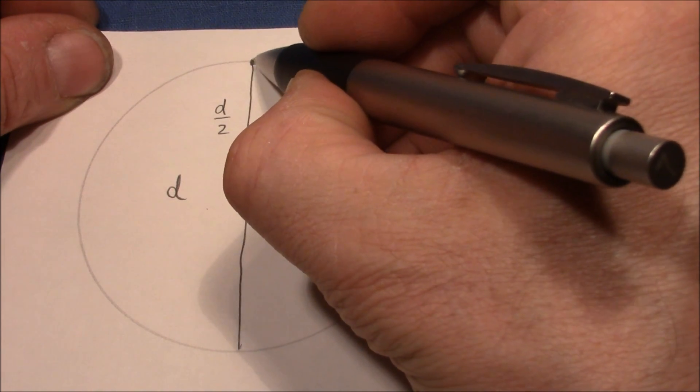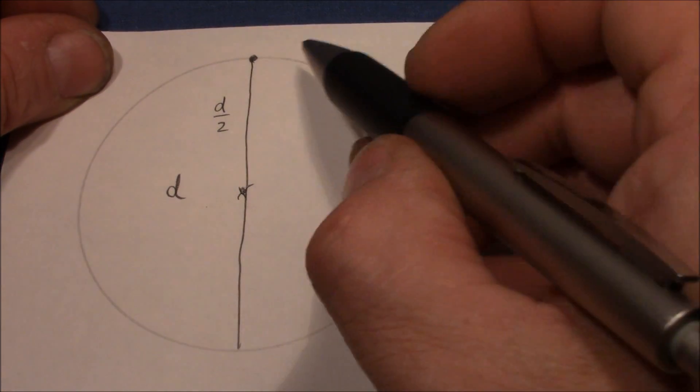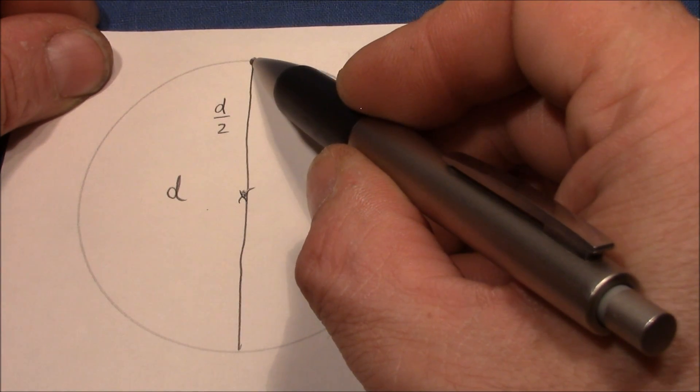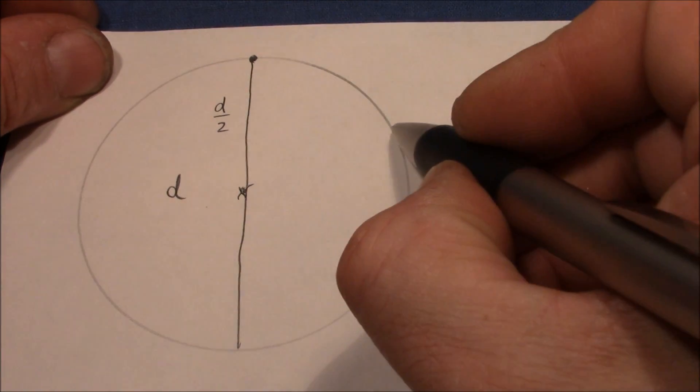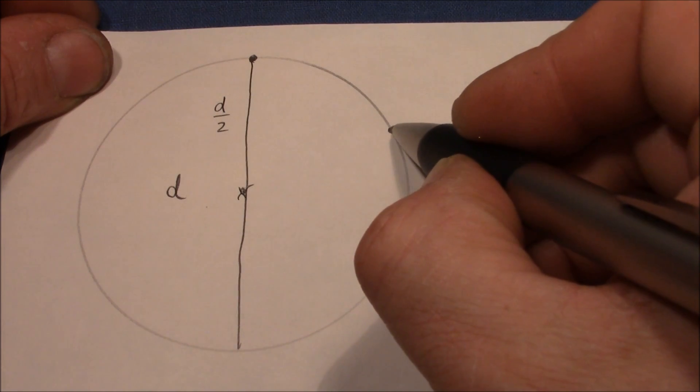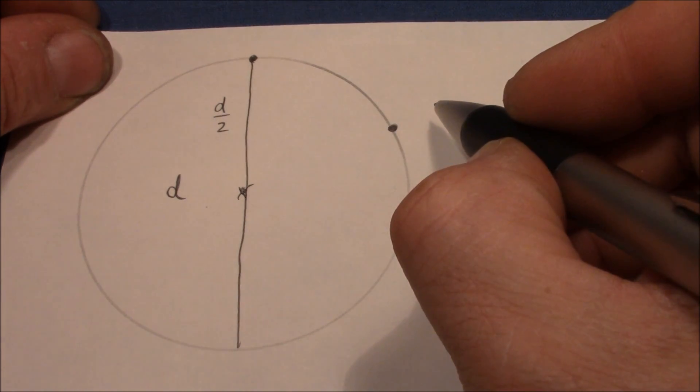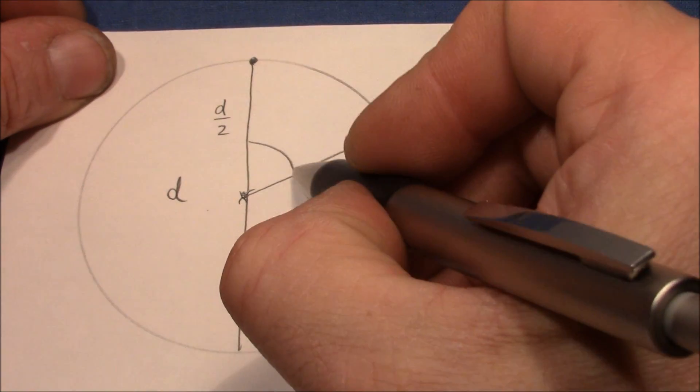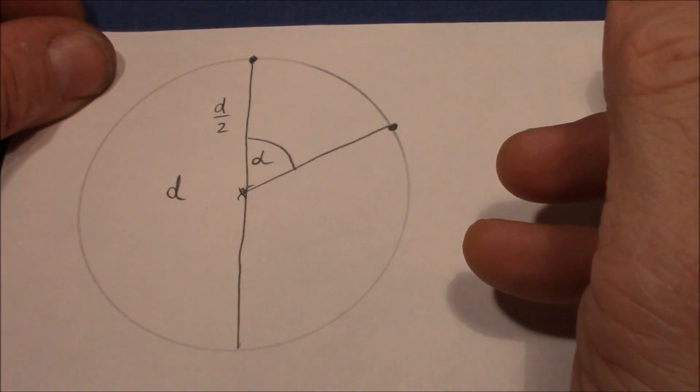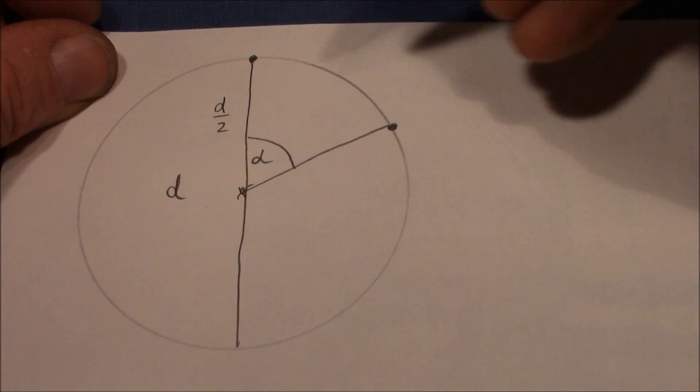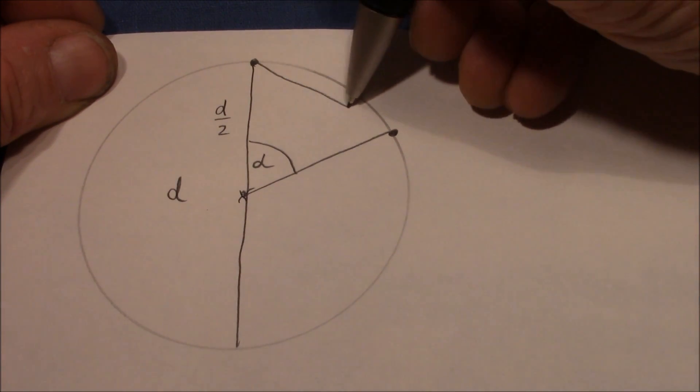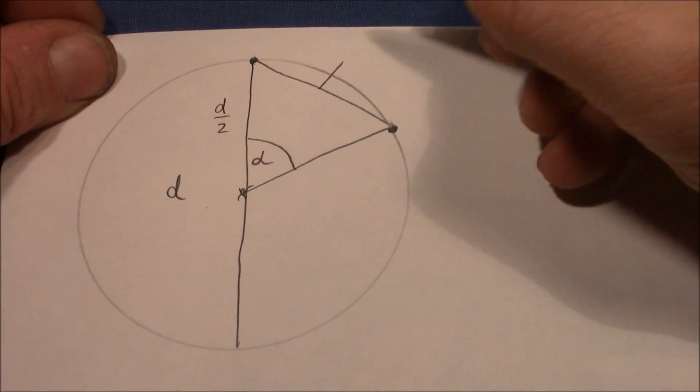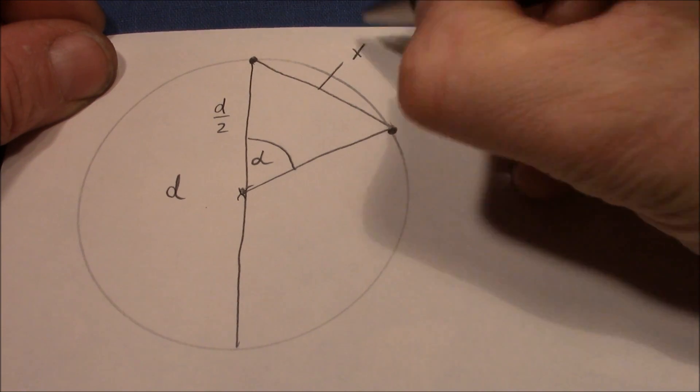Let's say that this is the zero position, the mark on the plug where you start picking. And this is the mark on the plug that indicates the maximum false set. So we are interested in this angle, let's call it alpha. But we also know this distance here, the distance between the two marks, and I call it x.